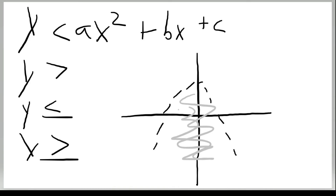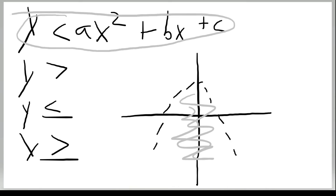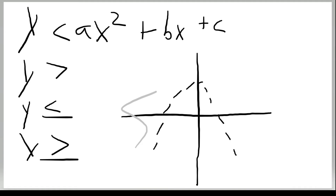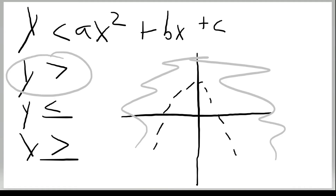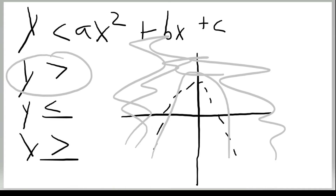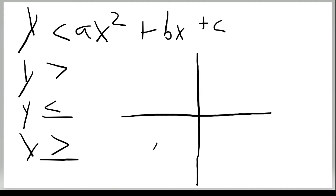For a downward-opening parabola with shading inside, it would be y is less than the function, so shading is on the inside. If shading is on the outside, y is greater than the function — it'd be on the outside. These two cases use strict inequalities with dotted lines.